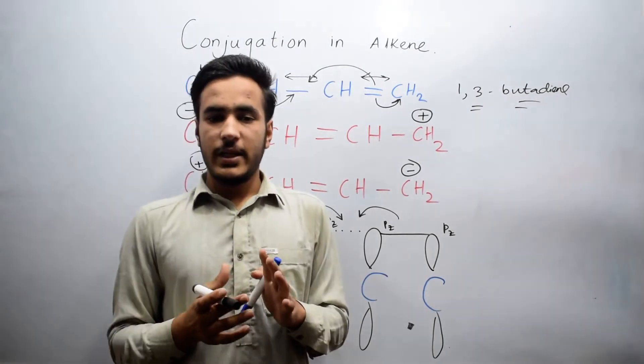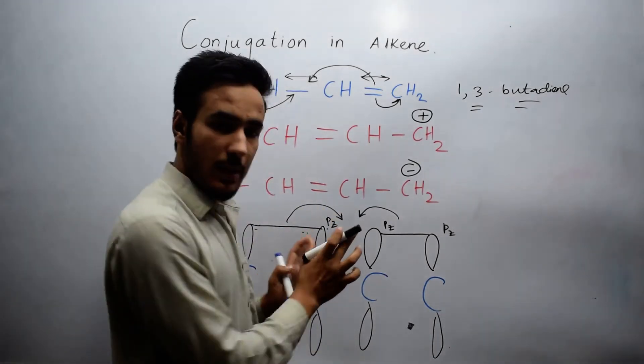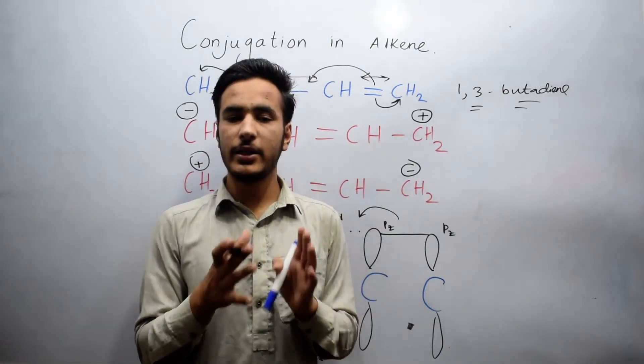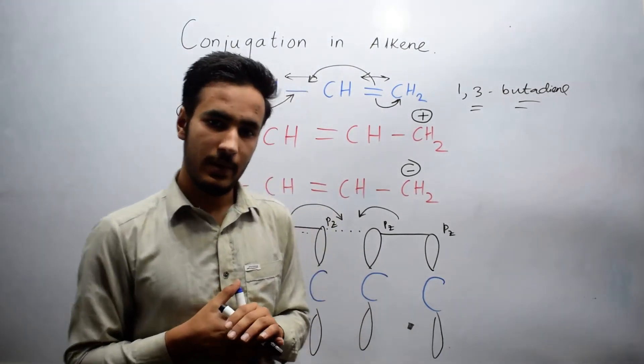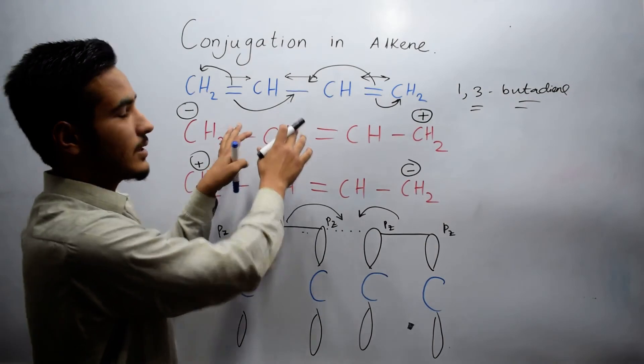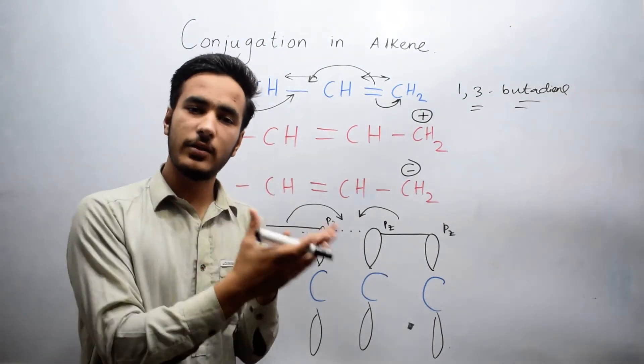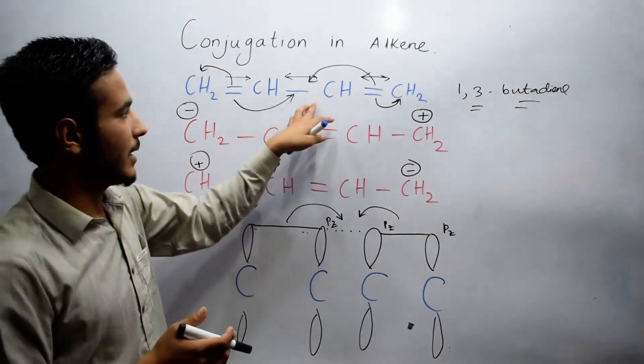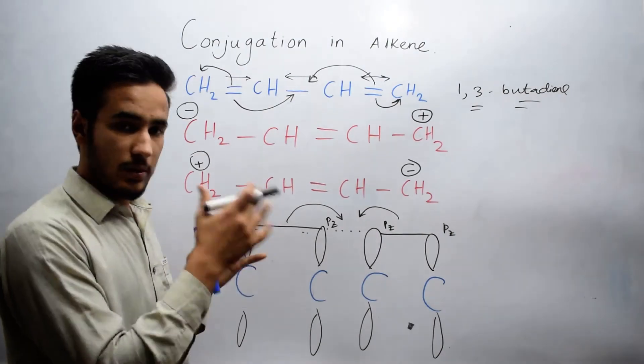Each pi bond has an equal chance to form a double bond on either side with other carbon atoms. They have an equal chance of where to form a double bond and can change their position.